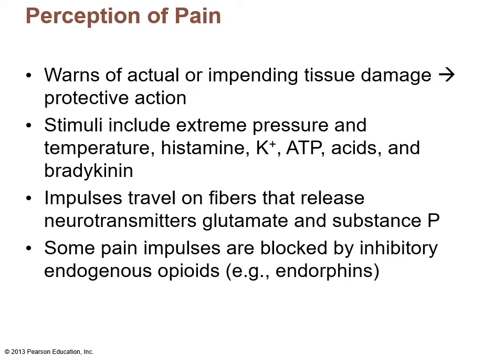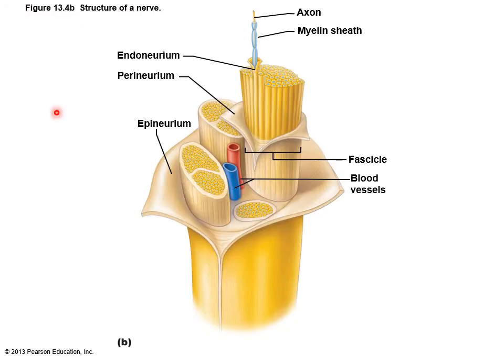Pain is not a bad thing because it warns the body that something is wrong — it's a protective action. The chemical messenger that binds to nociceptors is called substance P, and sometimes glutamate. You can block pain receptors with natural opiates called endorphins. Pain tolerance varies from person to person — it could be a lack of substance P, fewer receptors, high endorphin levels, or a mental ability to block it. Pain is actually very subjective.